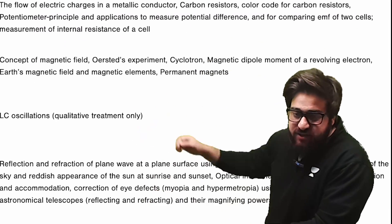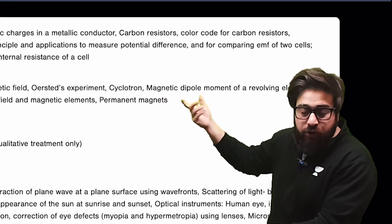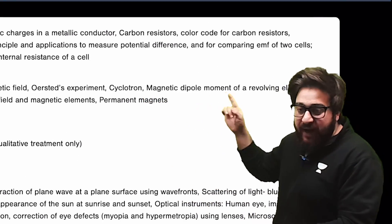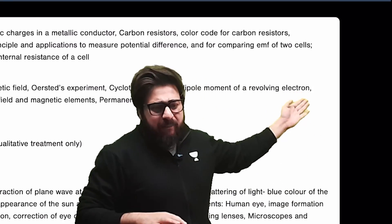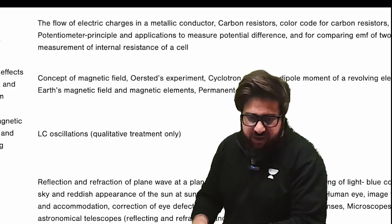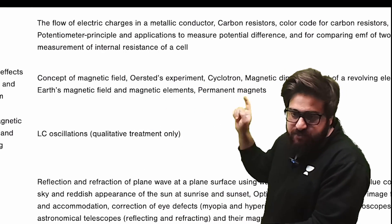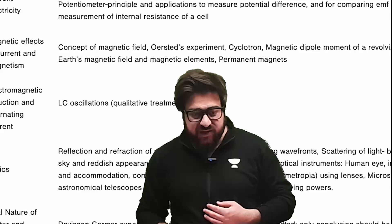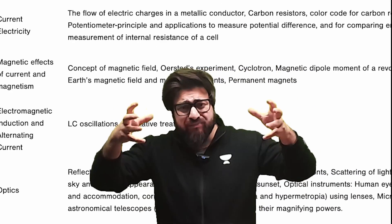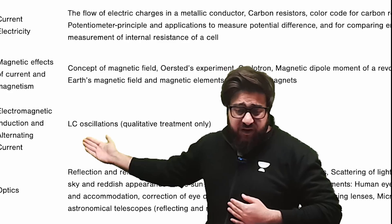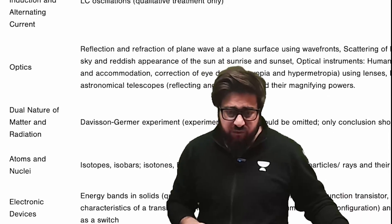Similarly, in magnetic effects of current you can see cyclotron — I didn't teach this particular topic. Magnetic dipole moment of a revolving electron: I did teach this topic, but it is actually deleted. And Earth's magnetic field and magnetic elements, paramagnetism, permanent magnets — everything over here is deleted. And LC oscillations, which was one of the bigger topics in electromagnetic induction, has also been removed.